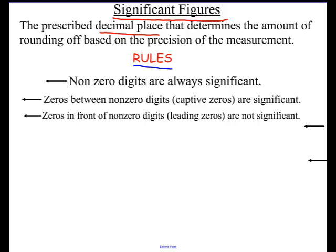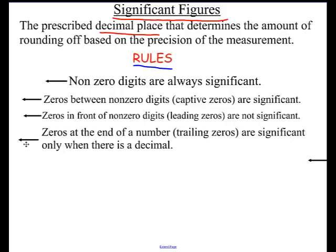Probably the biggest confusing rule: zeros at the end of a number — trailing zeros — are significant only when there's a decimal. For example, 50.0 meters versus 50 meters. You might say that's the same value, but in chemistry it's not. When I measured 50.0 meters, I had a ruler that measured to the tenth of a meter — it was dead on. But with 50 meters, that's more of an estimate; I just know it's accurate in the tens place. This is the rule that causes people problems, but zeros at the end only count when there is a decimal.